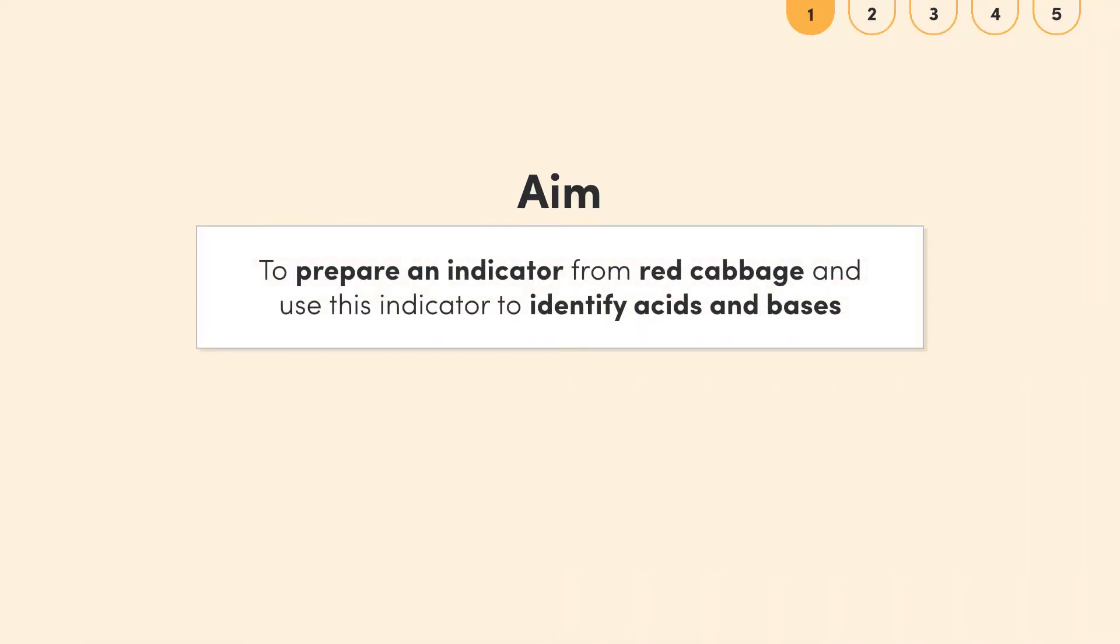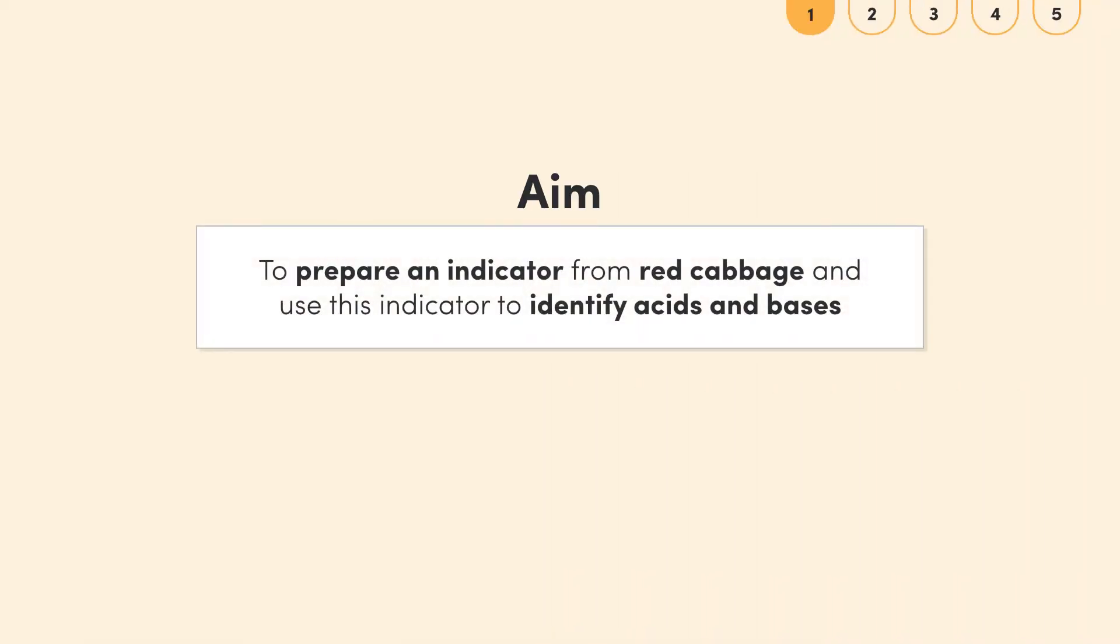Our aim in this experiment is to prepare an indicator from red cabbage and use this indicator to identify acids and bases. In other words, we're making an indicator and seeing what an indicator can tell us about acids and bases.